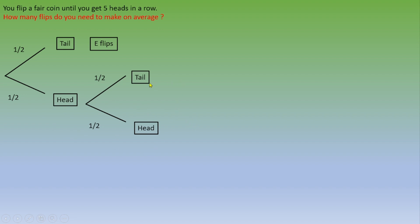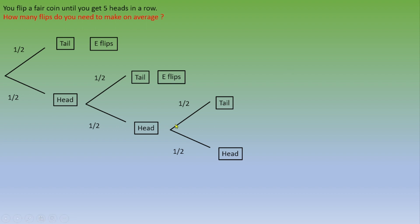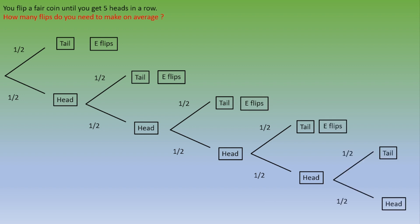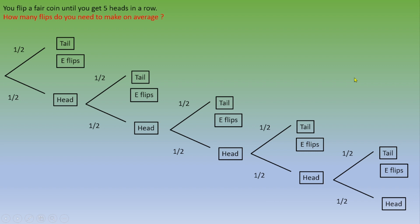If you end up with a head, you continue to flip. The same probabilities apply: you either get a head or a tail. A tail means you need to flip the coin E more times. Then on the third flip, probability one half to get a tail — again you need E more flips. If you get a head you continue. On the fourth flip, same: tail means E more flips. On the fifth flip, you either get a head and have five heads in a row, or get a tail and need E more flips.